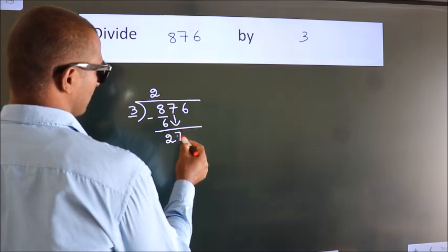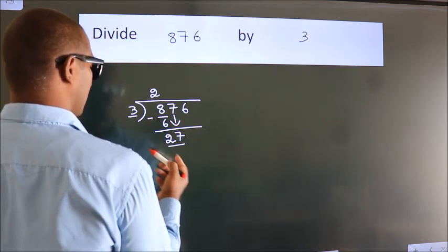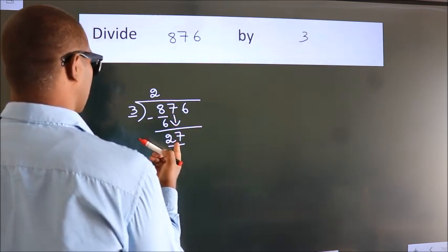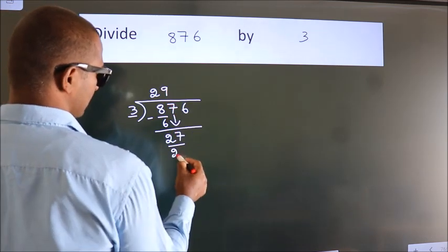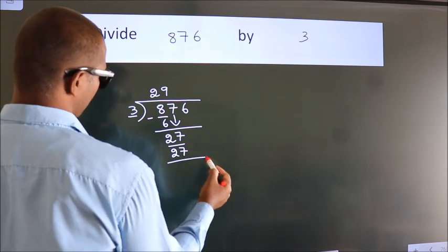So 7 comes down, making 27. When do we get 27 in the 3 table? 3 times 9 is 27. Now